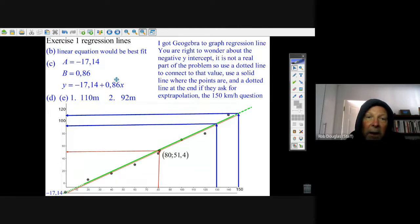Then I went shift stat and I hit regression line. I hit A and I got that number negative 17.14. Then I hit B and I got the gradient. There's the equation of the line and that's it.